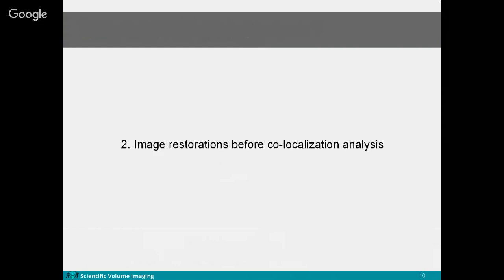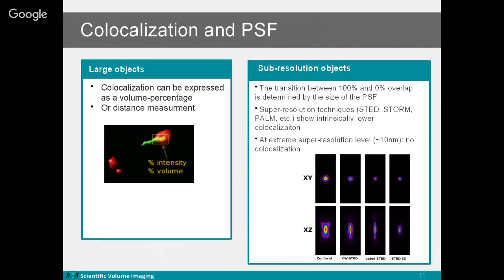Now I'd like to talk about restoration before image analysis and why we need it. The point spread function (PSF) is really important. If you want to study objects much larger than the microscope PSF, you can easily describe co-localization results as overlap volume in percentage or distance between them. However, for sub-resolution objects like proteins, the blurring from the microscope PSF is very significant.